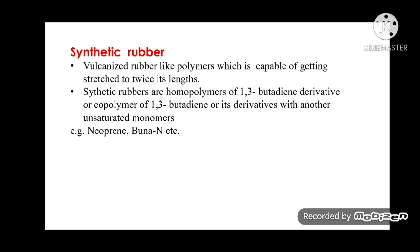Synthetic rubber refers to vulcanized rubber-like polymers capable of stretching to twice their length. Synthetic rubbers are homopolymers of 1,3-butadiene derivatives or copolymers of 1,3-butadiene or its derivatives with another unsaturated monomer. Examples include neoprene and Buna-N.